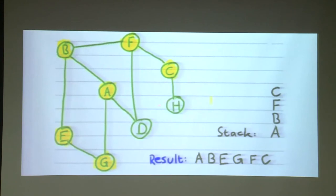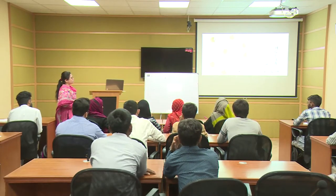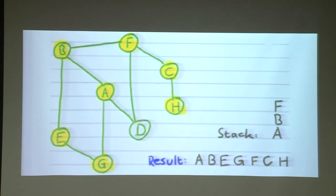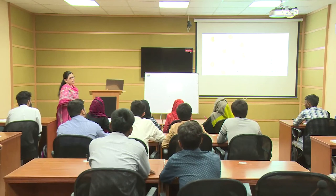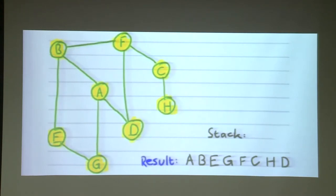Adjacent nodes of F are C and D. Visit C first (alphabetical order) — mark C, push on stack. H is adjacent to C, so visit and mark H, push on stack. H has no adjacent nodes left, C is visited, so pop H and pop C. D is still left for F — mark D, visit D, push it on stack. Pop D, pop F since all adjacent nodes are visited. B and A also have all adjacent nodes visited. The DFS search is complete.